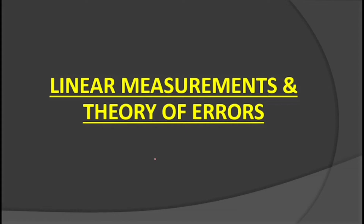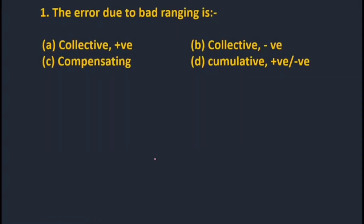Now I am going to start the MCQs of linear measurements and theory of errors. Our first question: the error due to bad ranging (misalignment) — correction is always positive, so error will always be negative.